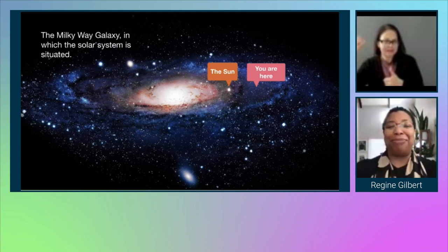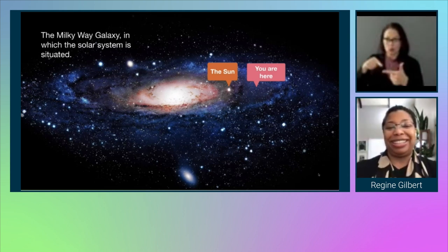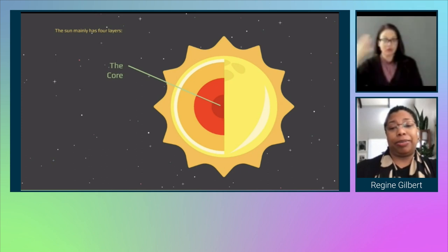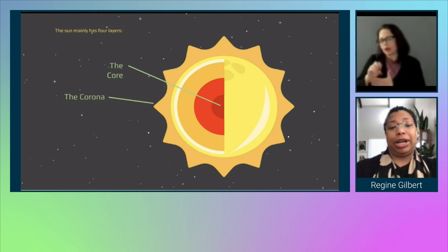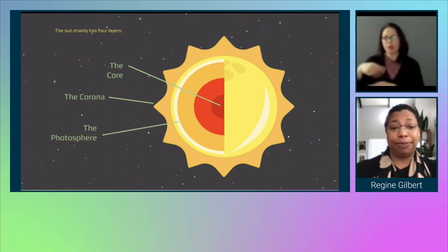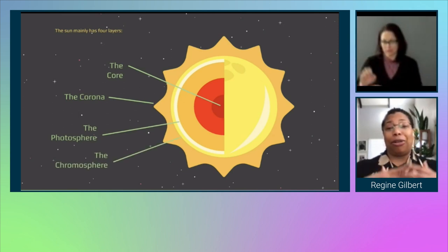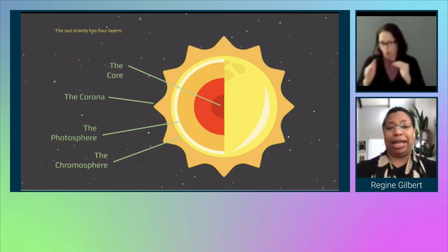I want to first talk about the sun and the sun's four layers. On the screen I have an image of the sun. The first layer pointing to the center of this image is the core. The next layer is the corona. The next layer is the photosphere. And then there is the chromosphere. These are the four main layers of the sun, though there are many other layers.